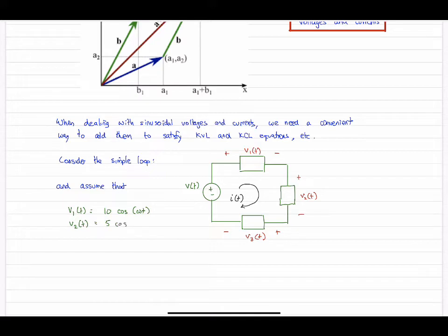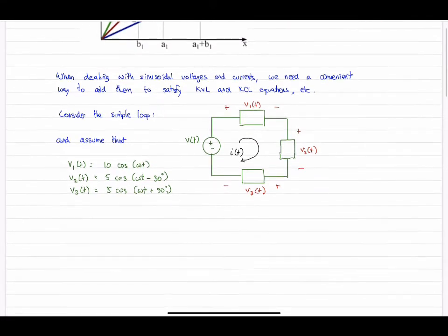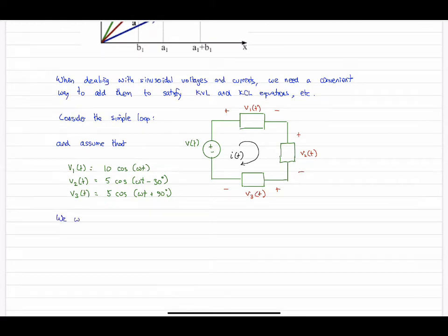And now just to simplify the problem, let's assume particular sinusoidal values for each of V1, V2, and V3. So V1 is amplitude 10, phase angle nothing, zero. V2, amplitude 5, phase angle minus 30 degrees. V3, amplitude 5, different phase angle, 90 degrees this time.